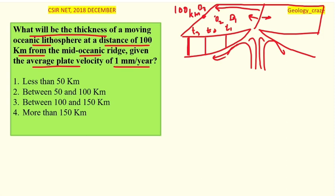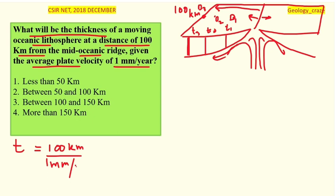We have two things: distance is 100 kilometers, and velocity is 1 millimeter per year. We know that speed equals distance over time, so time T equals distance divided by velocity. Now we need to convert units: 1 millimeter per year — we need to convert this so the kilometer units cancel.